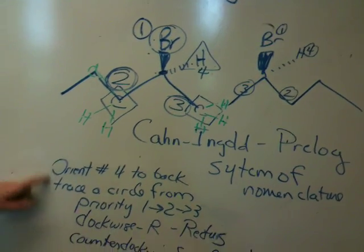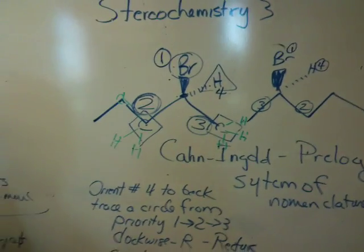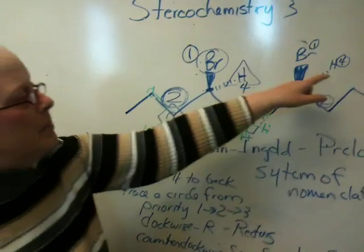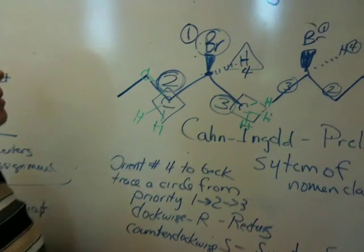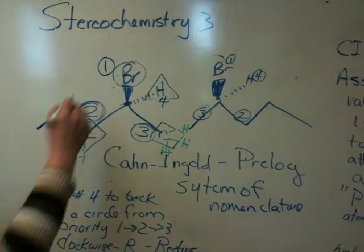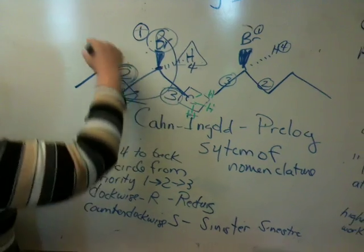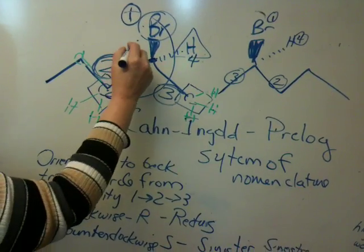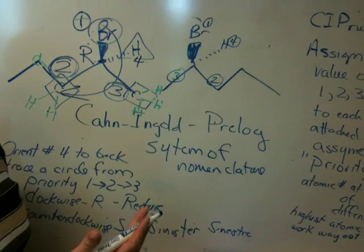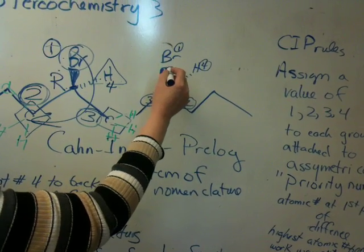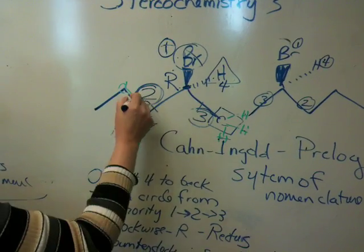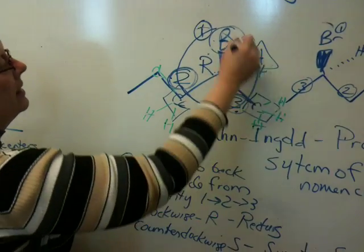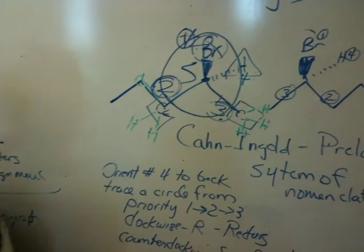These molecules happen to have number 4 going away, as described by the wedge notation. You orient number 4 to the back — that's just a rule. Tracing the circle from 1 to 2 to 3: I initially drew it wrong from 1 to 3 to 2, which made no sense. Correcting that, tracing counterclockwise — this is S. This compound should be the opposite, so when I trace from 1 to 2 to 3, it is a clockwise circle, so this is R.